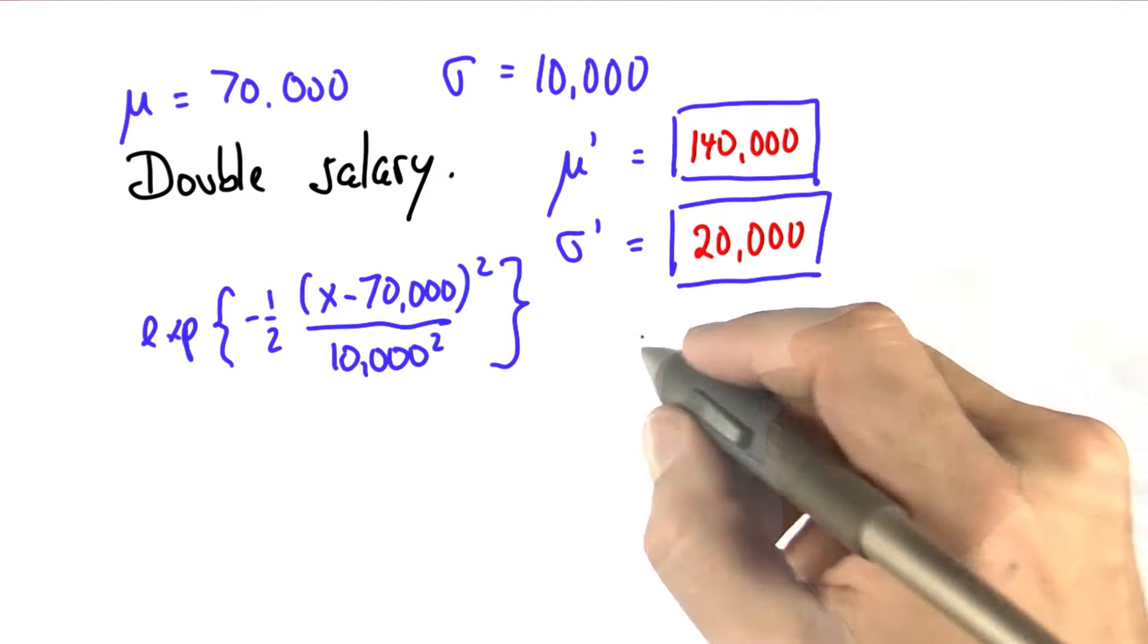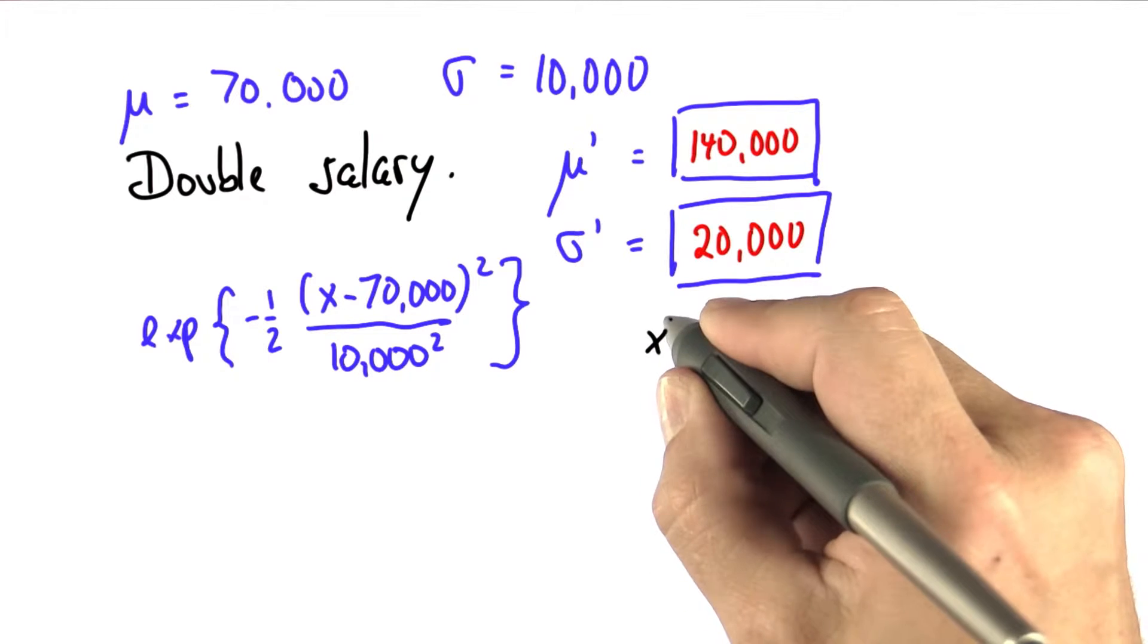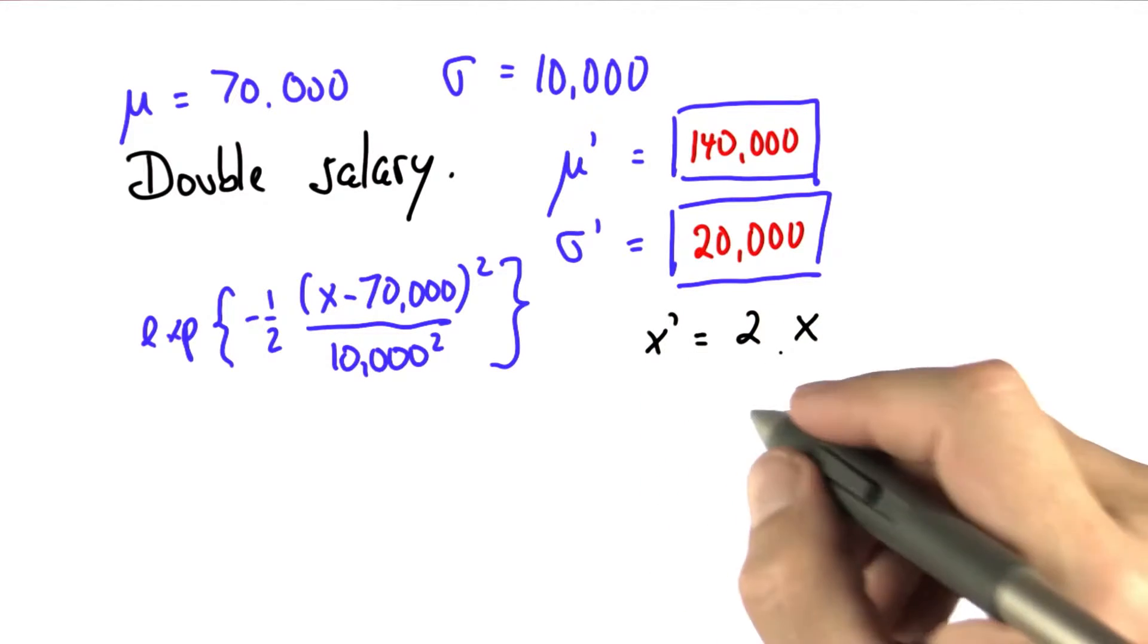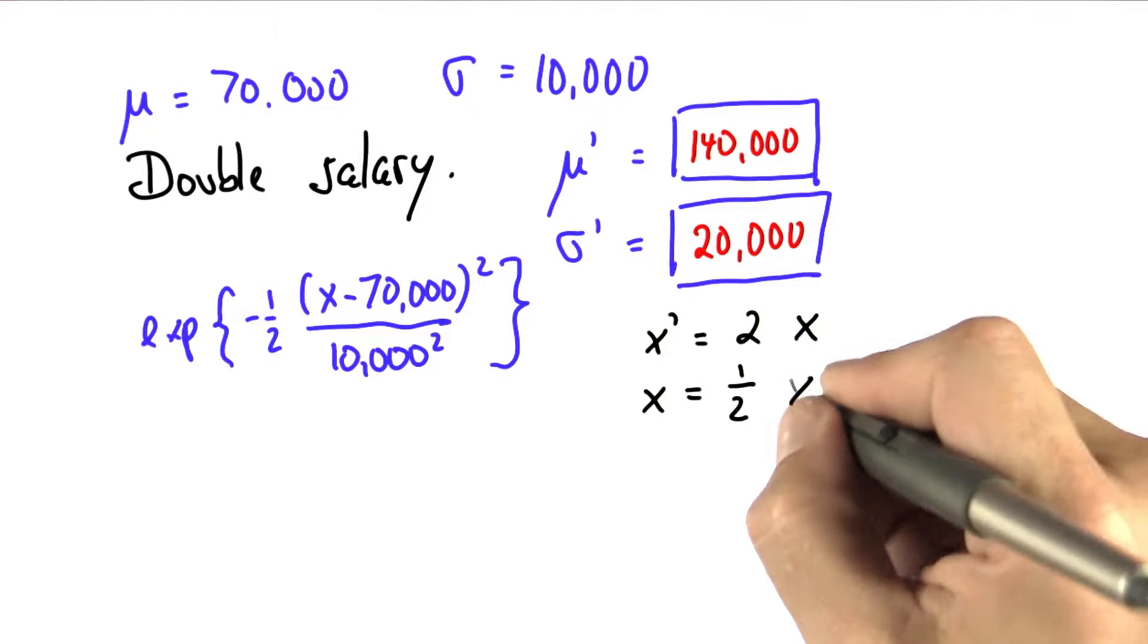And now we realize that the new salaries, x prime, are twice the old salaries. Or put differently, x will be a half of x prime.